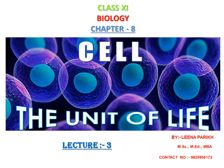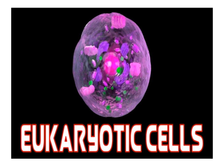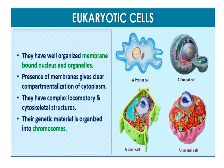Biology Chapter 8: Cell - The Unit of Life. Eukaryotic cells include all the protists, plants, animals, and fungi. In eukaryotic cells there is extensive compartmentalization of cytoplasm through the presence of membrane-bound organelles. Eukaryotic cells possess an organized nucleus with a nuclear membrane, and have a variety of complex locomotory and cytoskeleton structures. Their genetic material is organized into chromosomes.